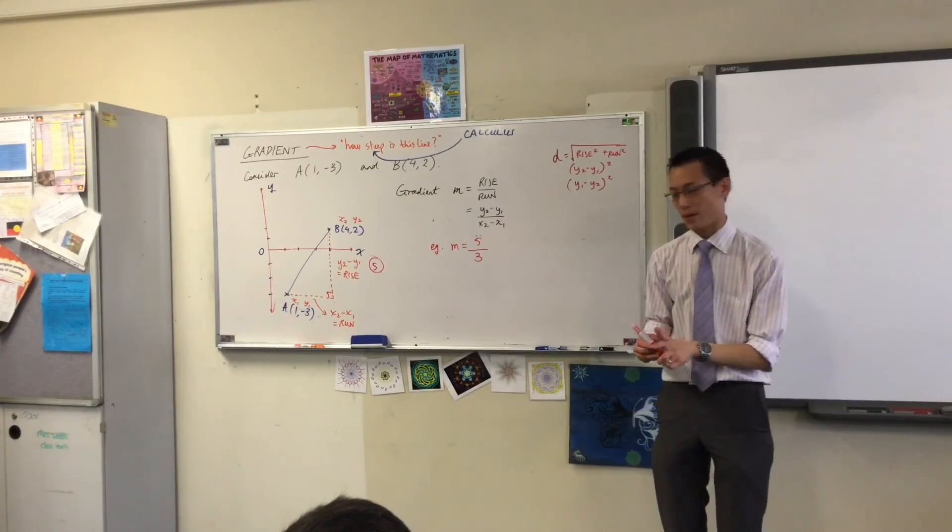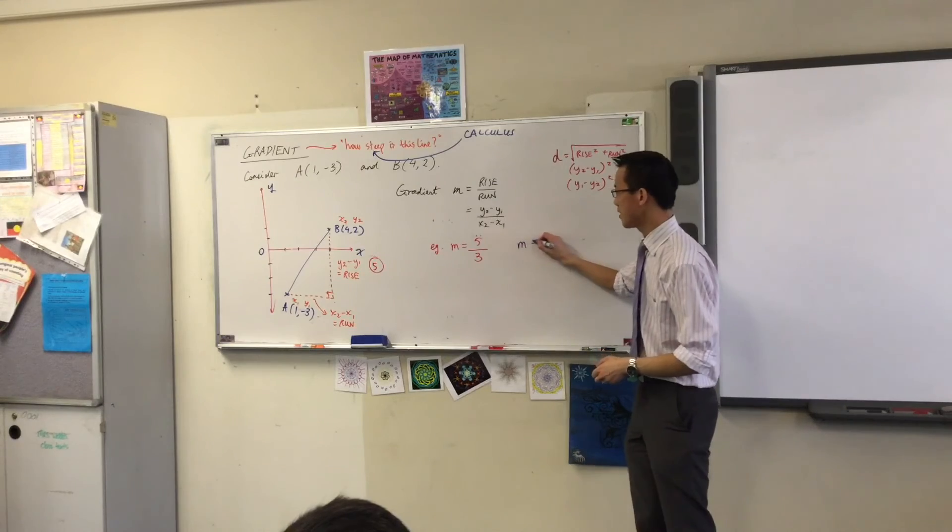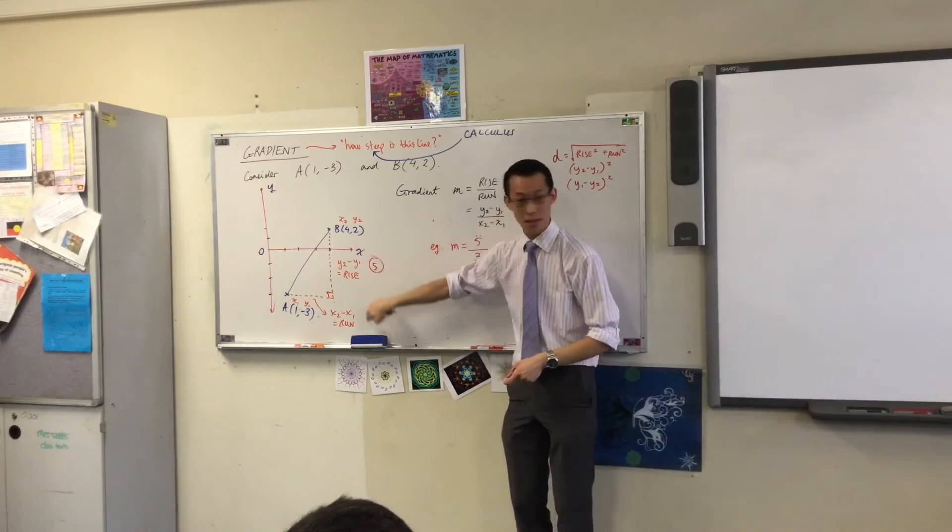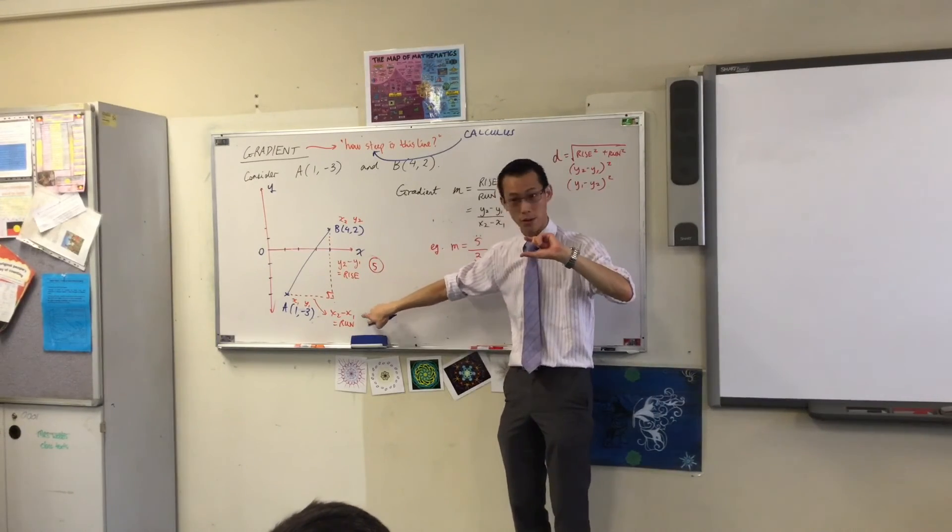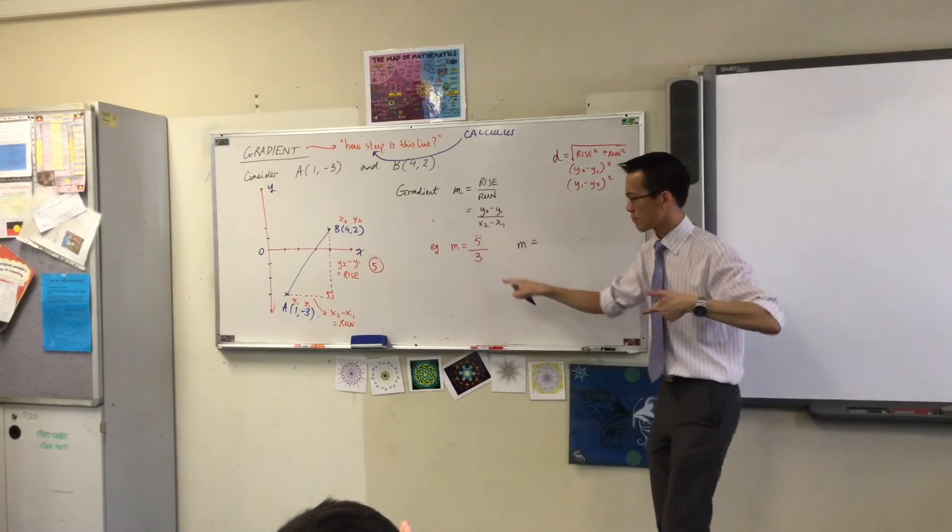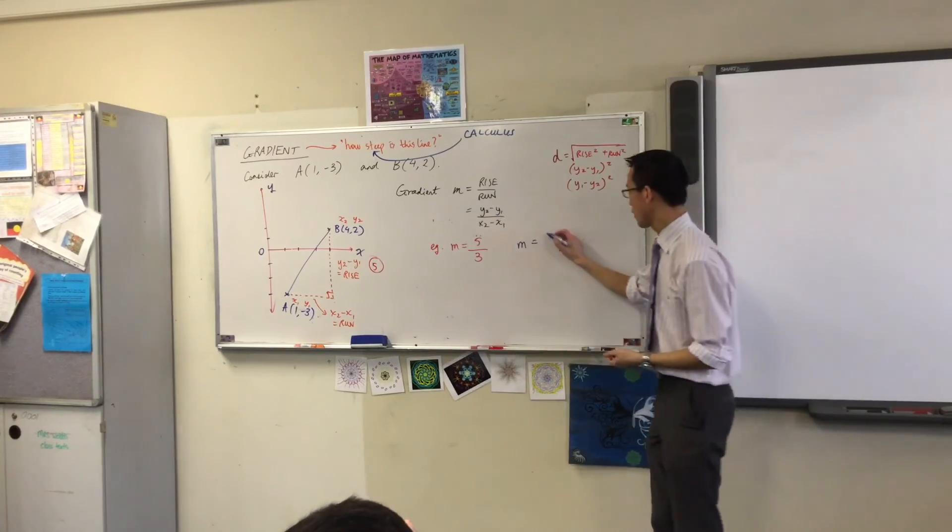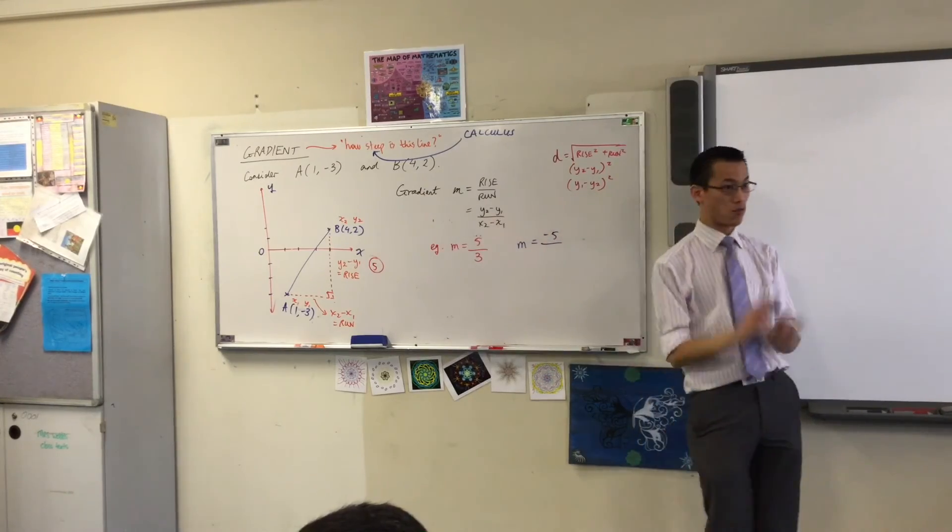Now, let's see what happens if I do it in reverse. If I now say, let's go rather than this, take away this, I'll do it backwards. This one, take away this one. What's the rise now? Negative 3 minus 2. That's the negative 5. That's the rise.